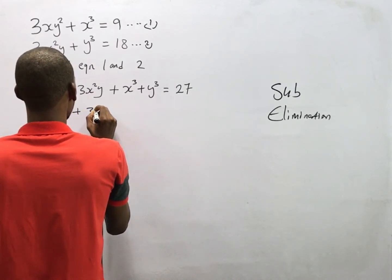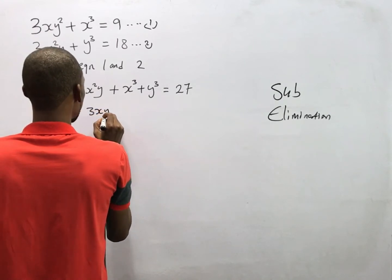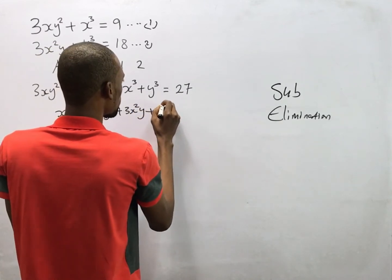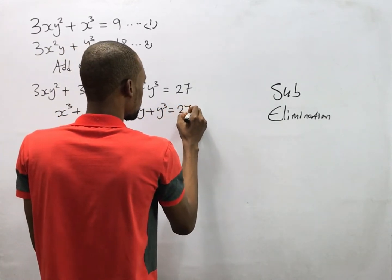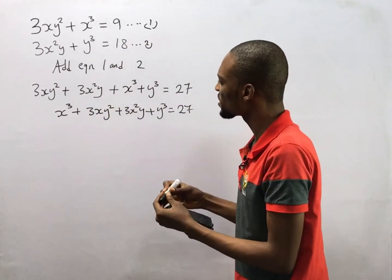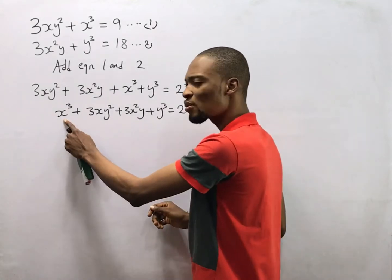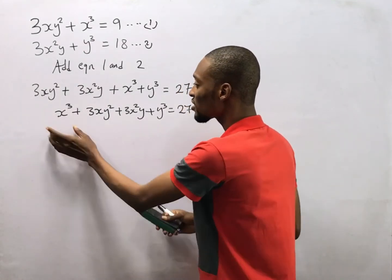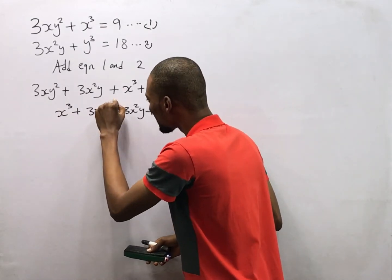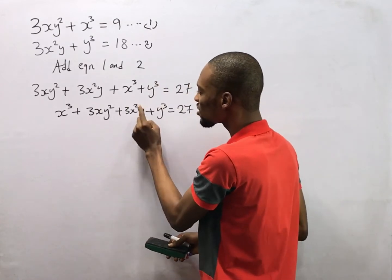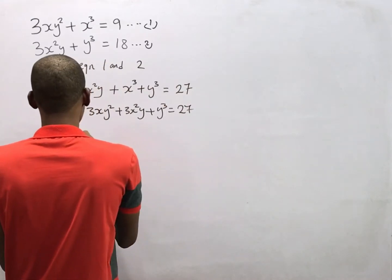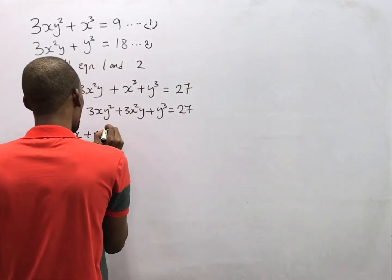Now take a look at this — something comes to mind. You see there is s², s³, and y³, and there is sy² and s²y. What this reminds me of is something like (s + y)³.